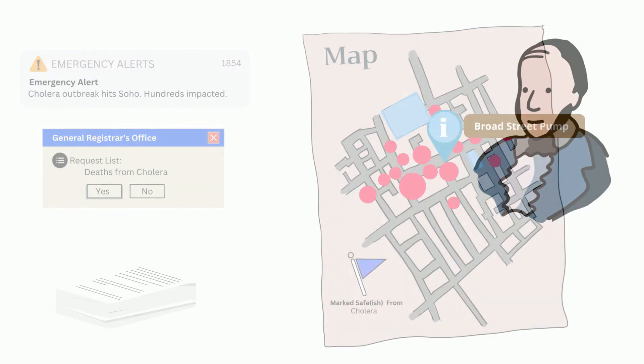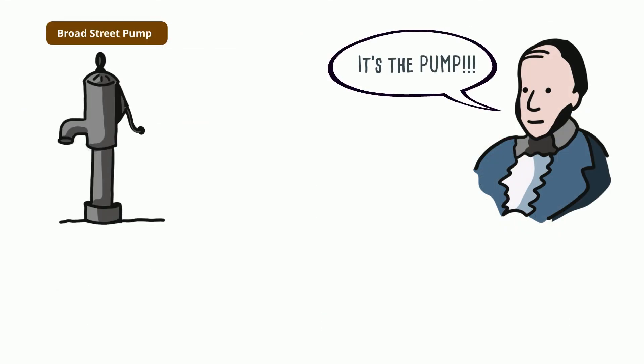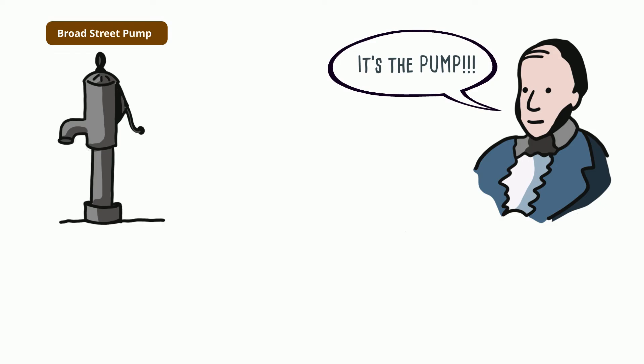He found that they were using alternate sources of drinking water. From these observations, Snow concluded that contaminated water from the Broad Street pump was what was making people sick. Although his ideas were treated with skepticism, Snow convinced authorities to remove the handle of the pump so it could not be used. The outbreak ended shortly after.